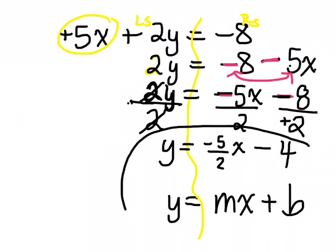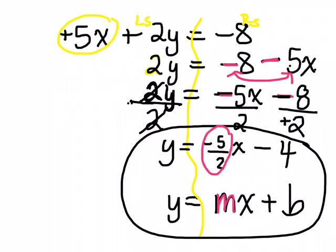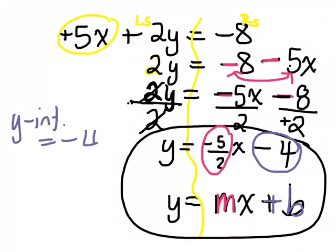Now this is in slope-intercept form. What's my m? What's my slope? Negative 5 over 2. And what's my y-intercept? Negative 4. So the y-intercept of this equation is negative 4.